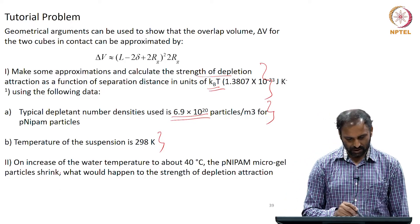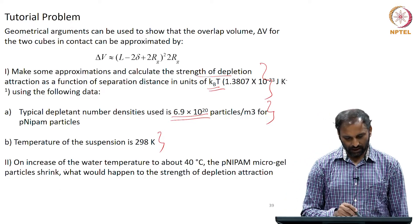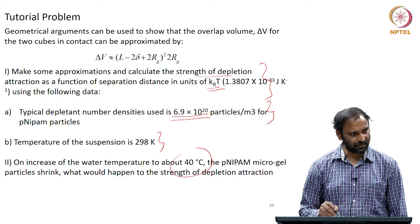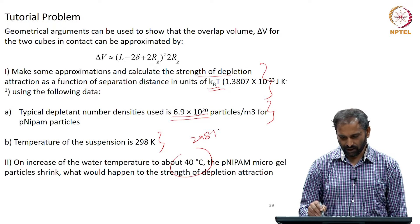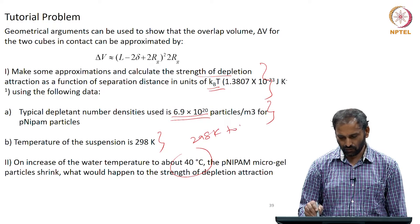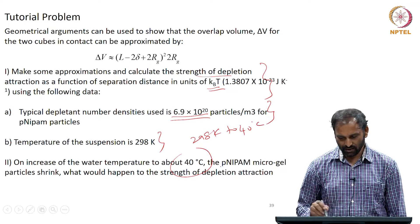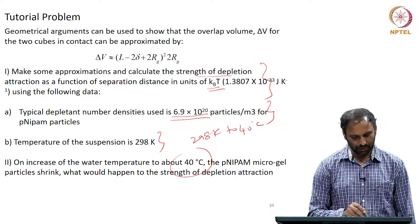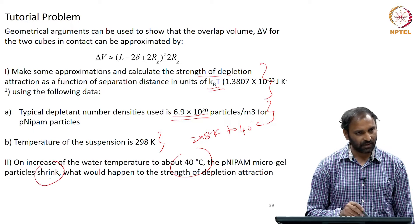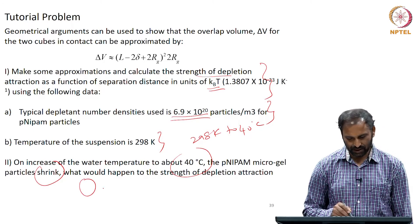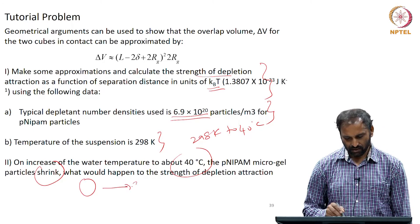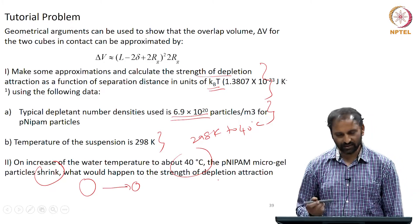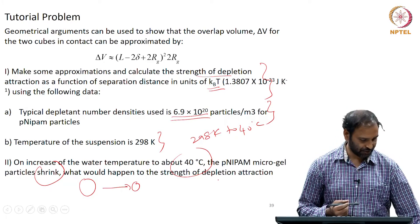The second part of the question is about increasing the temperature of the dispersion from 298 Kelvin to 40 degrees centigrade. The PNIPAM particles are known to shrink — if they are bigger in size they will become smaller — and you are asked what would happen to the strength of the depletion interaction.